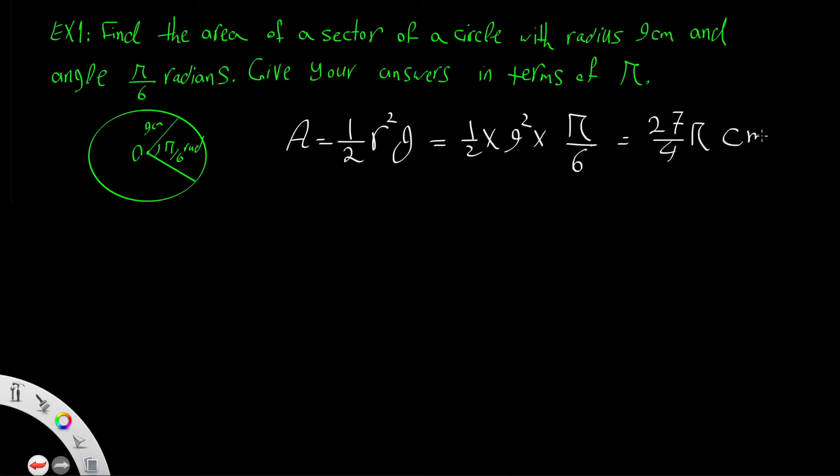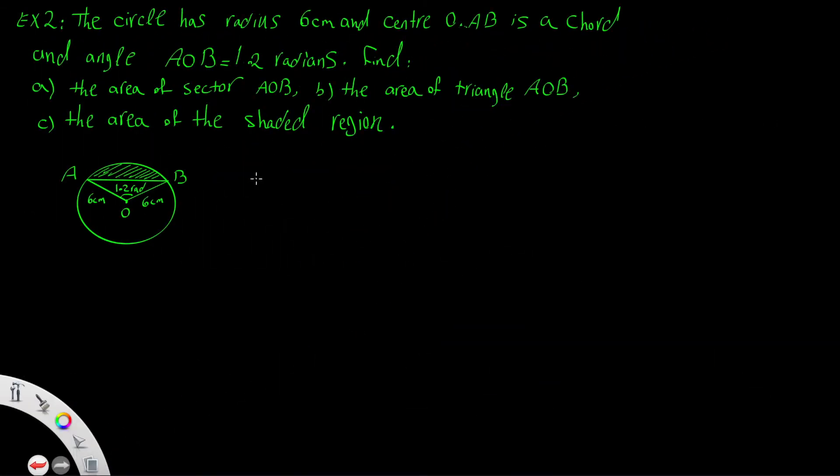Example 2: The circle has radius 6 centimeters and center O. AB is a chord, a line segment joining two distinct points on the circumference. Angle AOB is 1.2 radians.